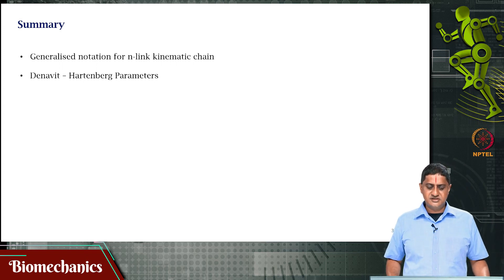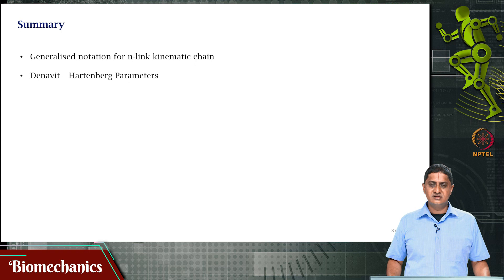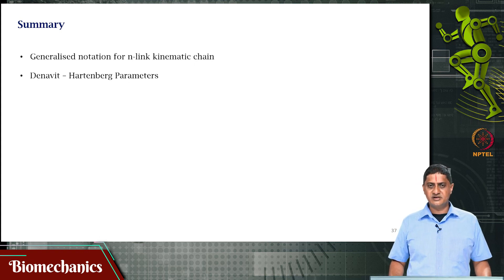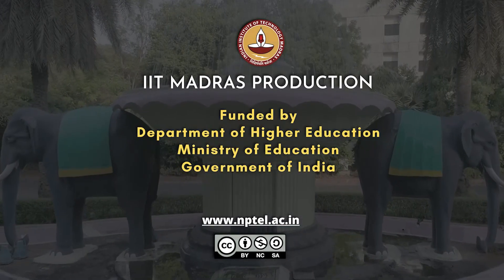In this video, we saw a generalized notation for studying an n-link serial kinematic chain and the Denavit-Hartenberg convention — the DH parameters — for defining and understanding the endpoint coordinates, and in the forward kinematics case, for describing a transformation matrix. Thank you very much for your attention.